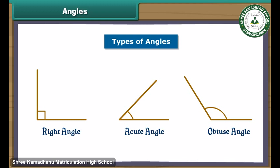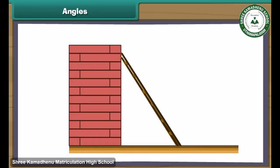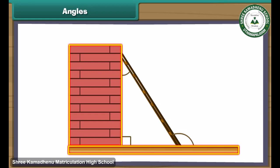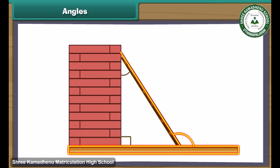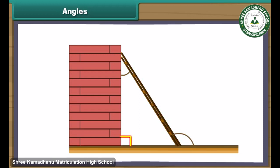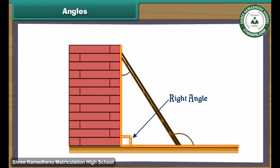Look at this scene: a ladder is standing against a wall. Let us look at three angles — the angle the wall makes with the ground, the angle the ladder makes with the wall, and the angle the ladder makes with the ground. The ground acts as the base and the wall as the vertical line. The angle is L-shaped — it is a right angle and its measure is 90 degrees.